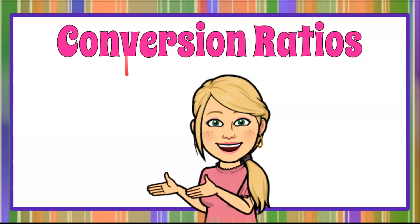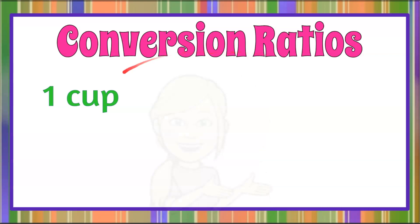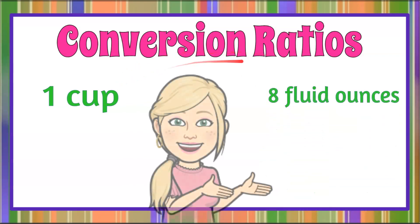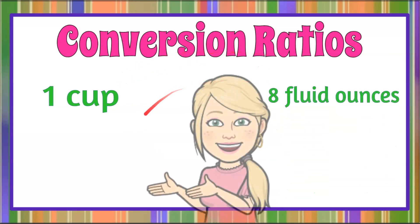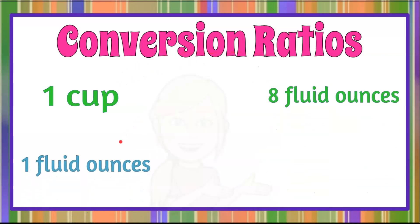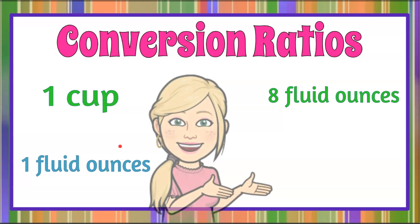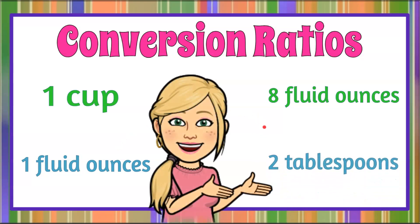It's The Magic of Math, and today we're going to be using conversion ratios. The first conversion ratio is one cup is eight fluid ounces, and the second is that one fluid ounce is equivalent to two tablespoons.